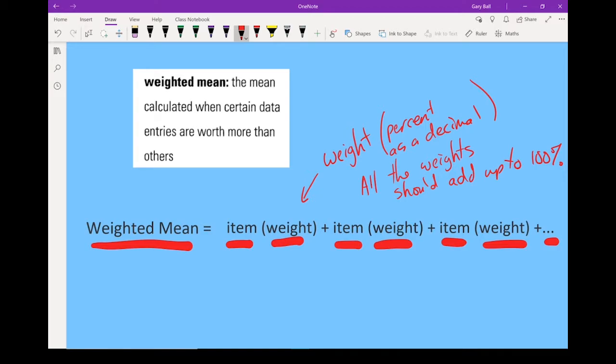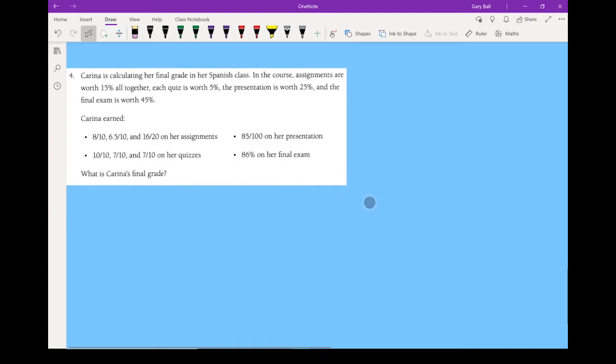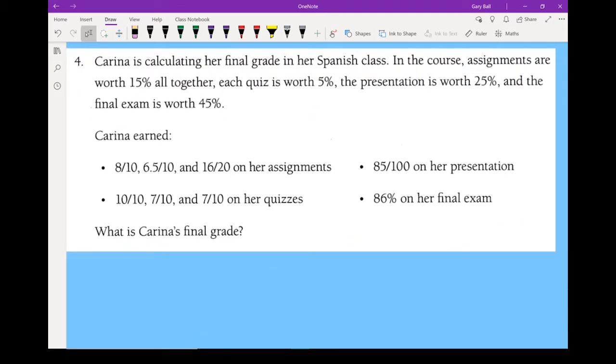Let's calculate one here so we can see how this works. So starting here with this question, Karina is looking at her final grade. All the assignments are worth 15% altogether. Each quiz is worth 5%, the presentation is worth 25%, and the final exam is worth 45%. That's a nasty final exam. And then down here it lists what she got on each of her marks.